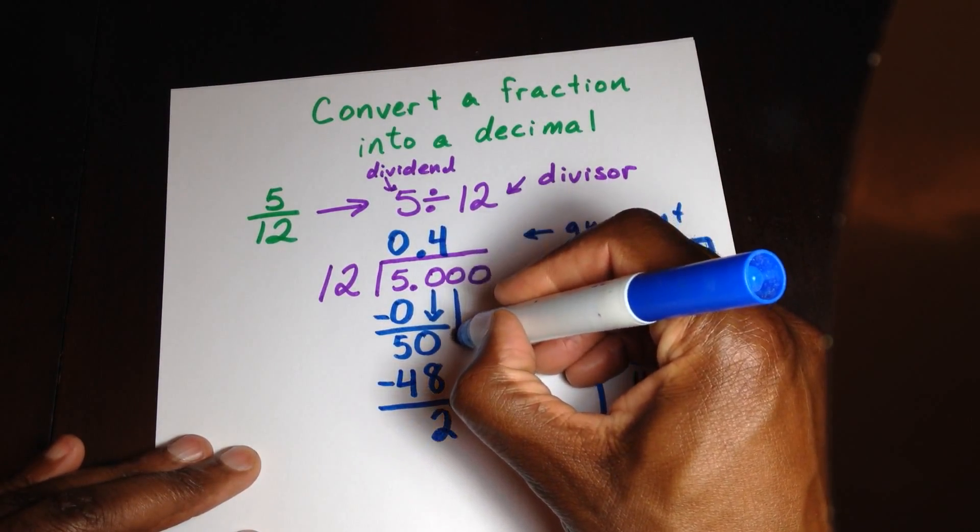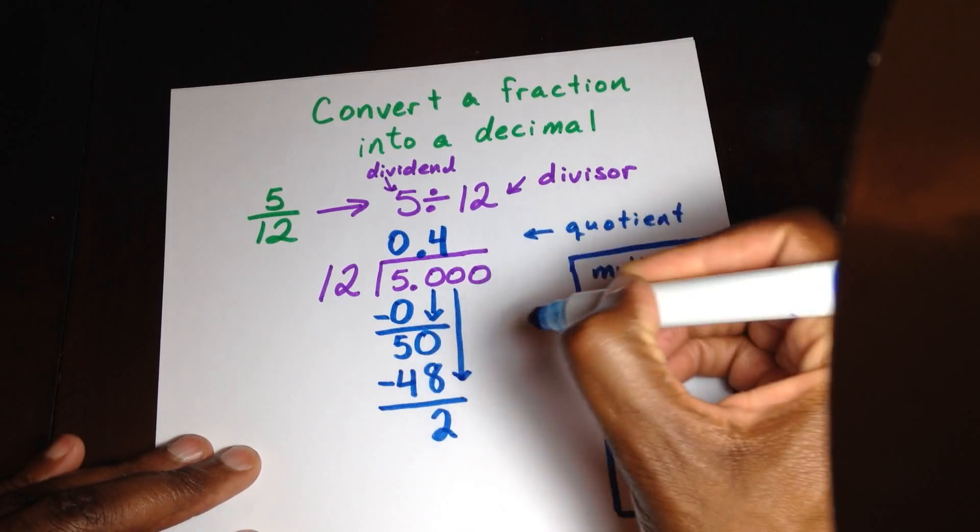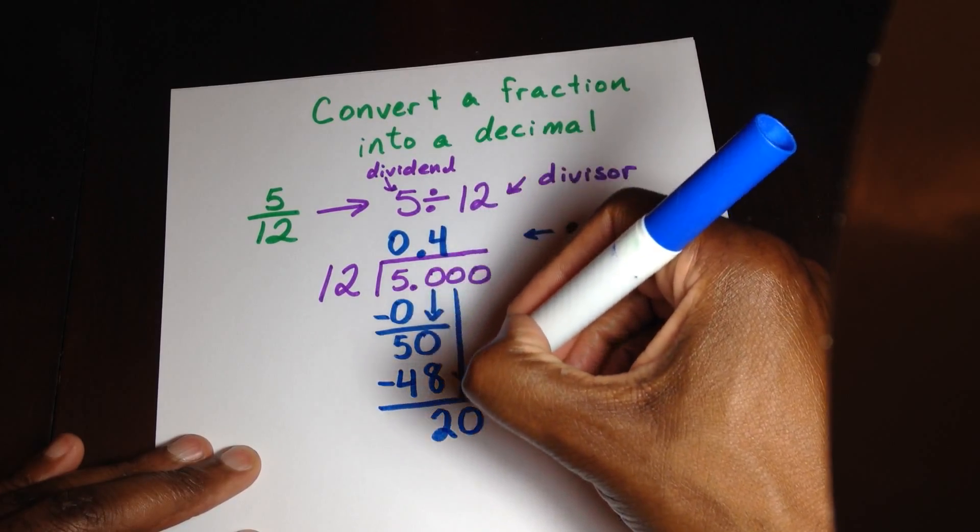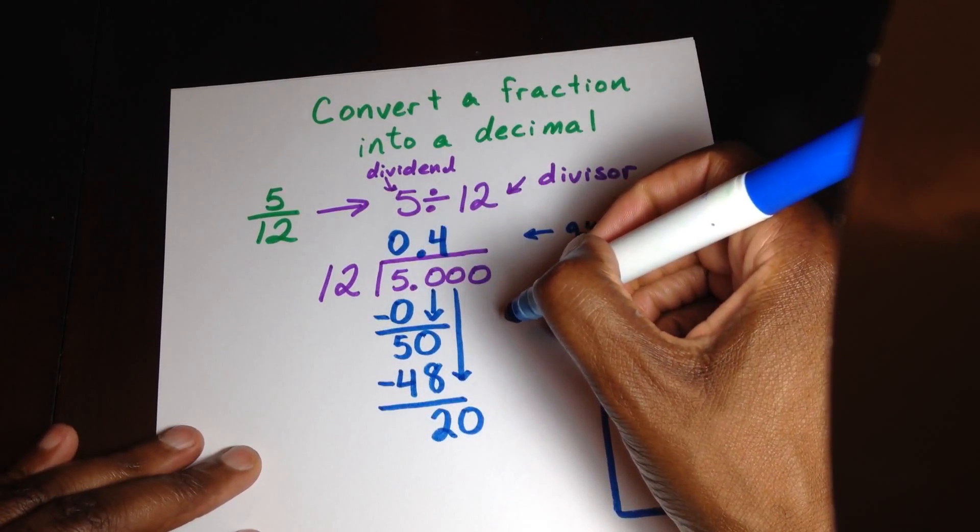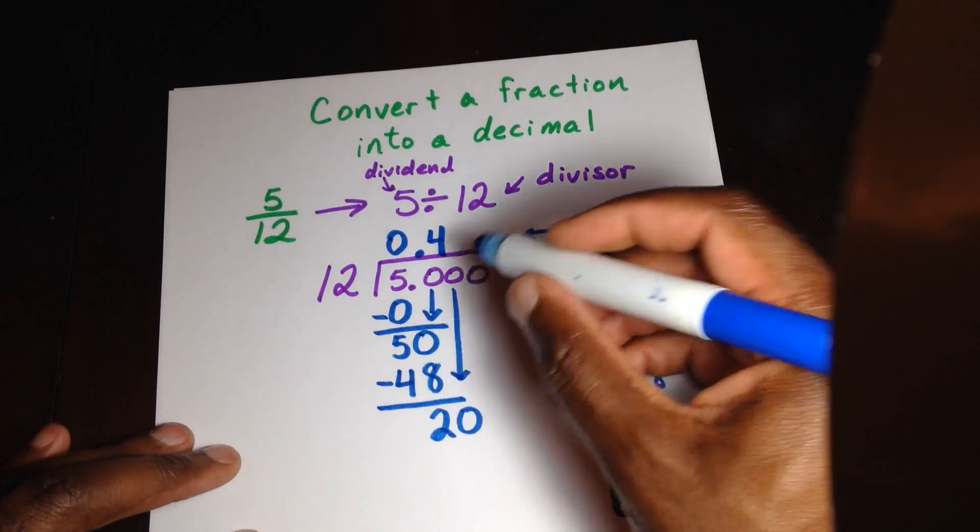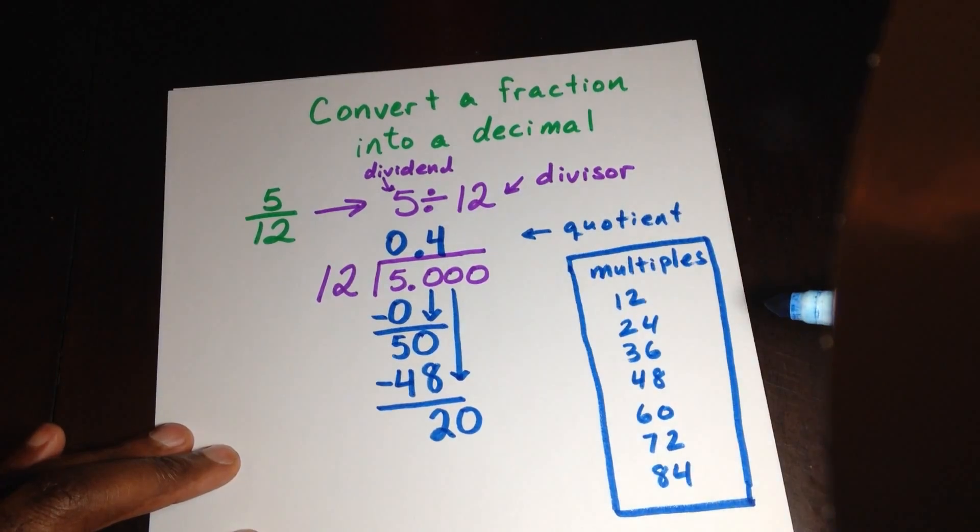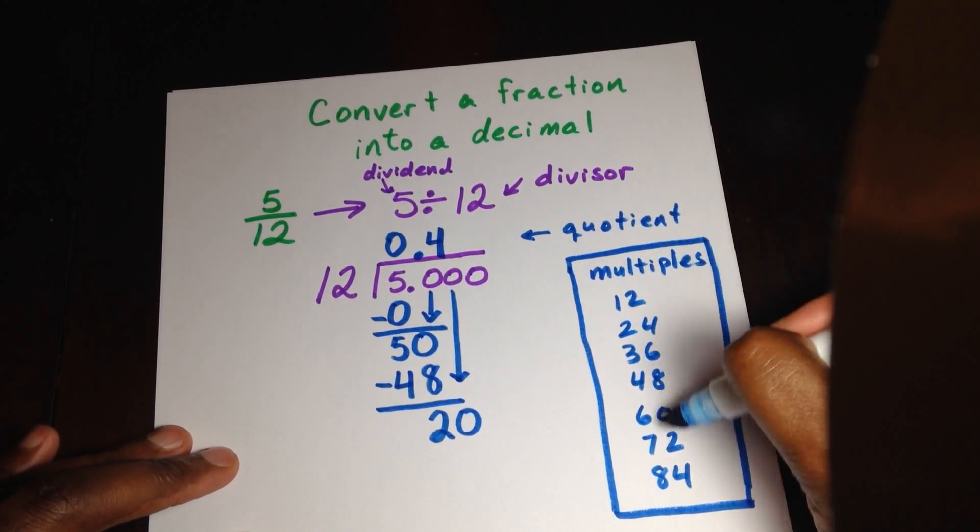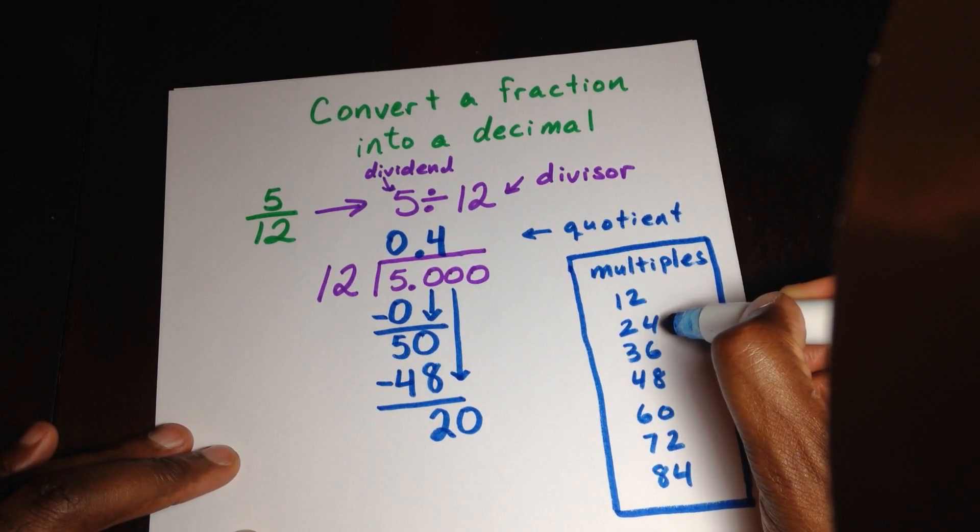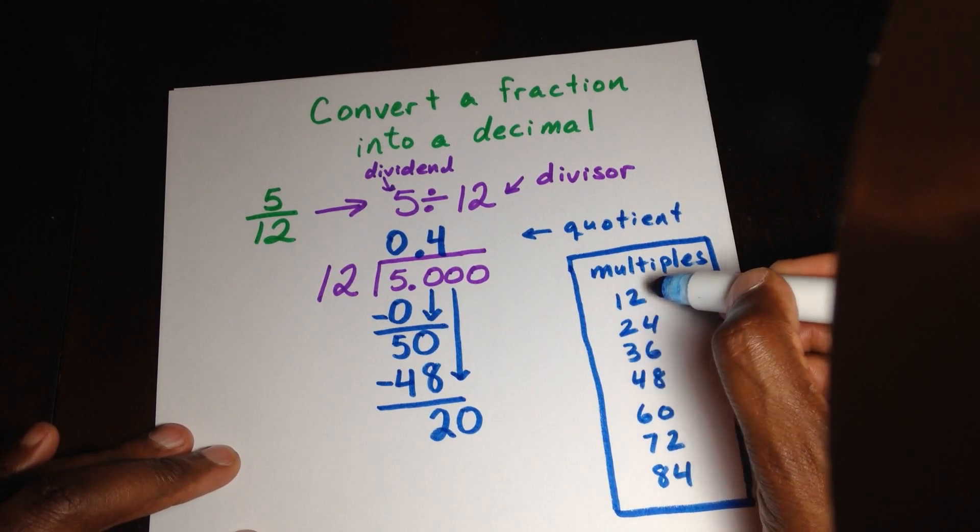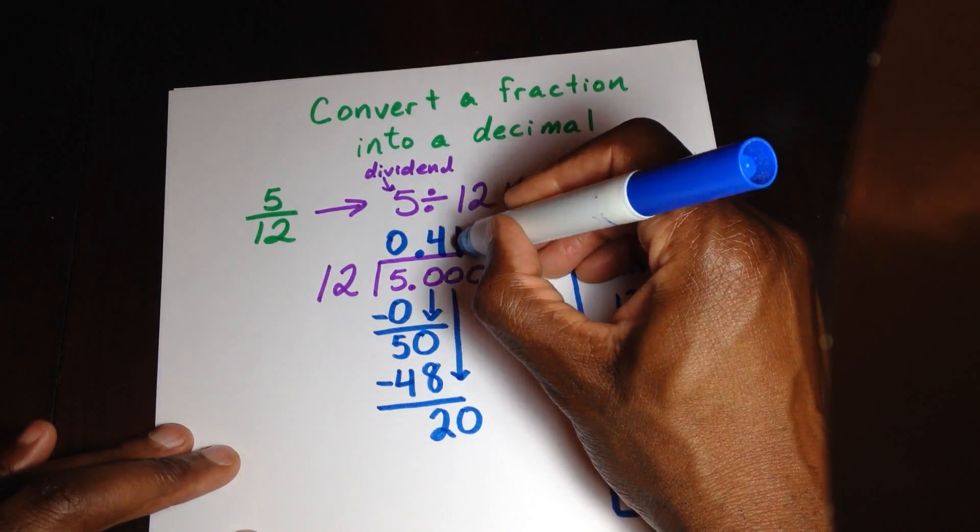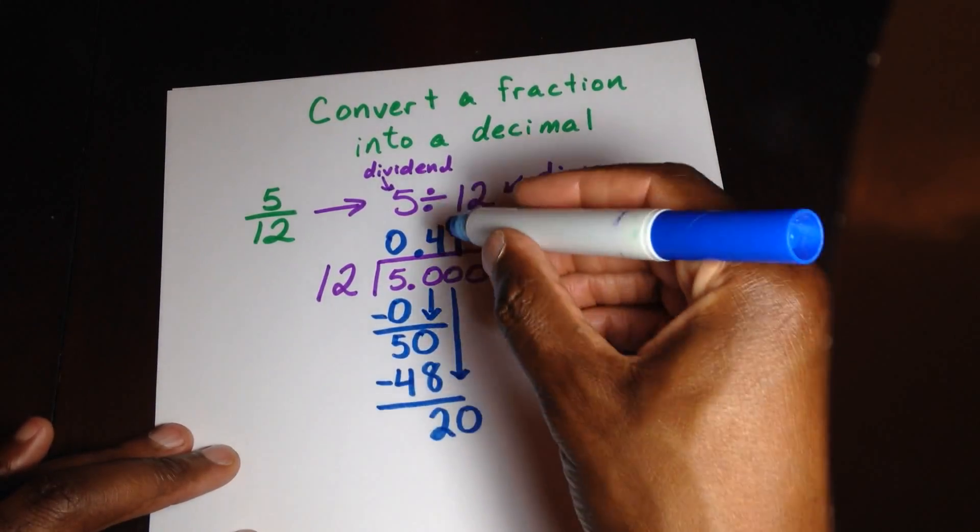Now I'm going to bring down my next 0. Notice that I'm keeping my numbers lined up. See how everything is lined up straight because if I don't do it like that, what happens is errors can be formed. So let's now continue. I want to see how many 12s can go into 20. Look at my multiples. I see the closest number without going over. It's not 24. 24 is too high. So it's going to be 12. That's one set of 12s. That's going to be 1 here.